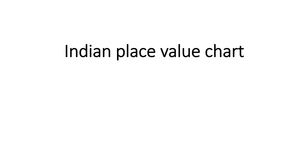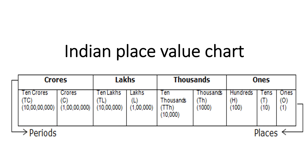In the Indian system of numeration, we study the Indian place value chart. There are periods: ones, thousands, lakhs, and crores. The ones period is divided into three places: ones, tens, and hundreds. The thousands period is divided into thousands and ten thousands. The lakhs period is divided into lakhs and ten lakhs. The crores period is divided into crores and ten crores. We use this Indian place value chart to solve many kinds of questions.